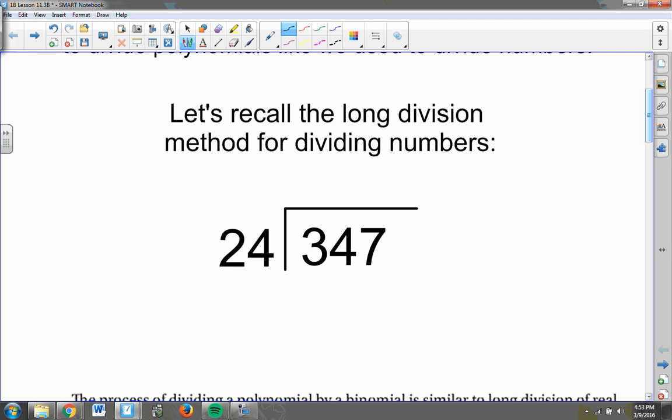If I were to ask you to divide 347 divided by 24 by hand, the first thing we do is look at the number we're dividing by and see how many times it goes into this first number, the 3. Well, obviously 24 doesn't go into 3 at all, so I just put an x up there. Then I take the first two numbers because it didn't go into the first number.